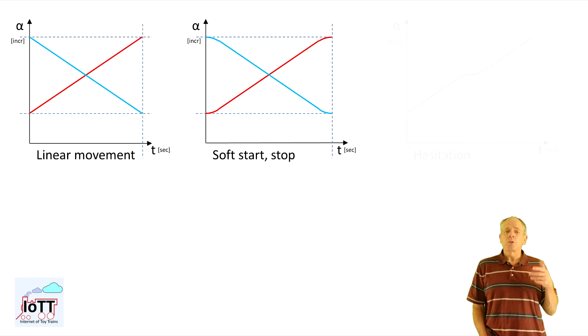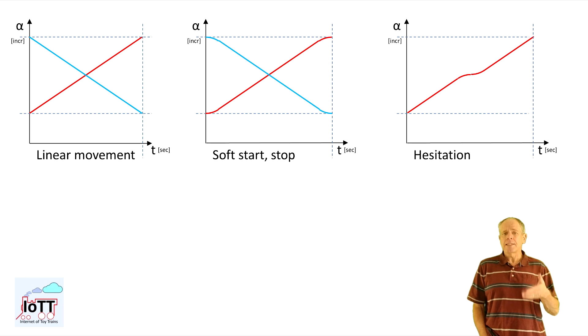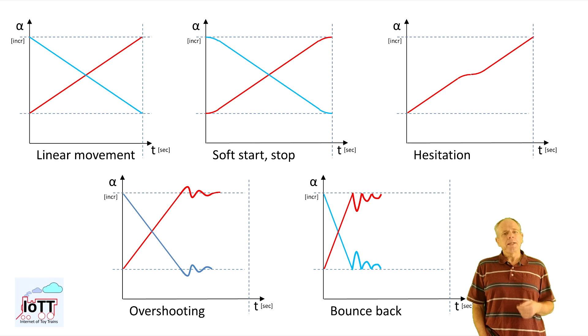Then there could be a hesitation, meaning a temporary slowdown or even standstill somewhere in the middle of the path. And finally, some crazy movements at the end of the path, either oscillation from overshooting or bounce back, caused by running into a mechanical stop.